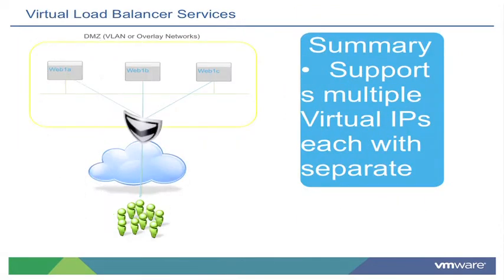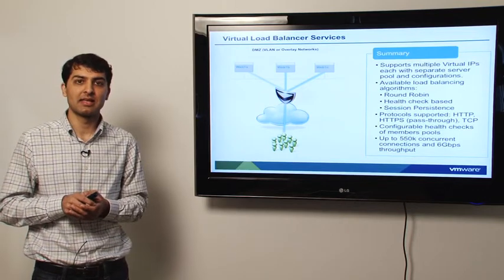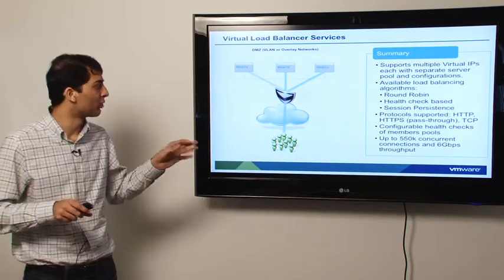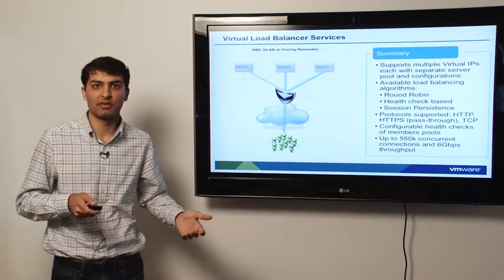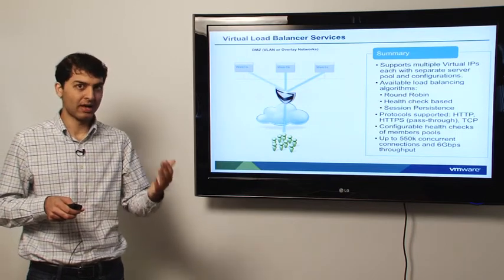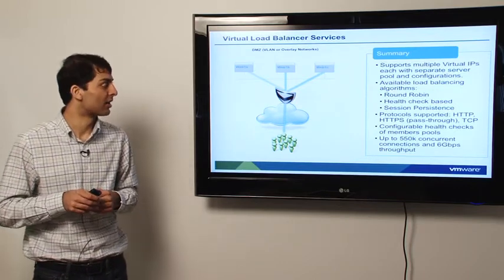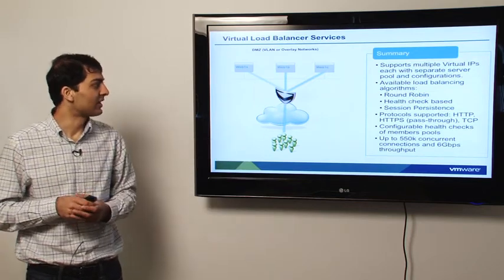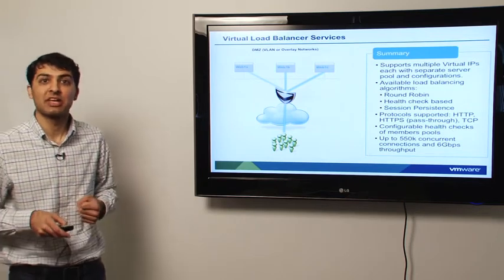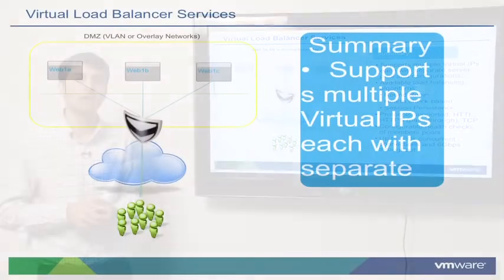VMware has a load balancer that's been shipping for several releases and we've plumbed it into the Quantum stack. We have support for multiple virtual IPs and separate server pool configurations — your typical load balancer. We have traditional load balancing algorithms, support for many protocols, and good performance. I would say 550K concurrent connections and 6GB throughput is sufficient for most application workloads today. We'll see a demo of this VMware load balancer implementation in a few slides.